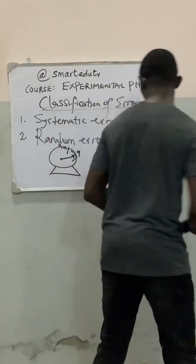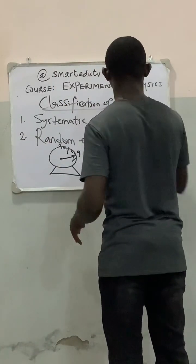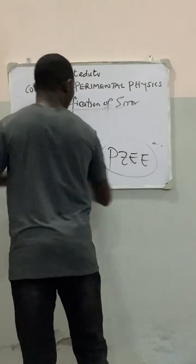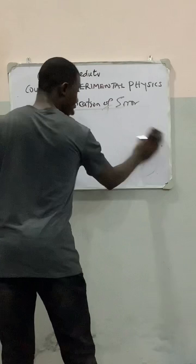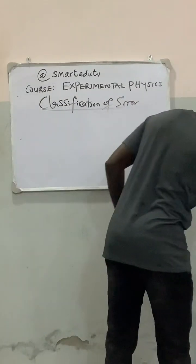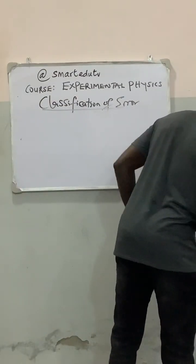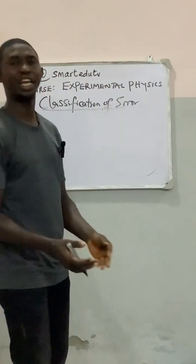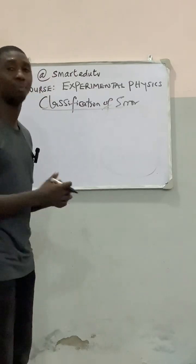And the next we are going to look at is the random error. Random error. What do we mean by random error? Random errors are uncertainties in the measurement made by the observer.